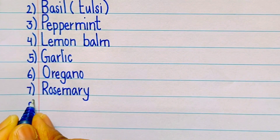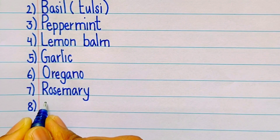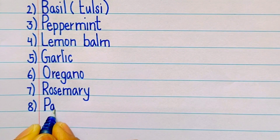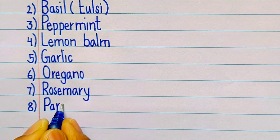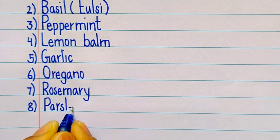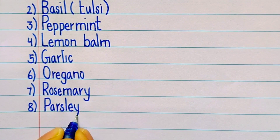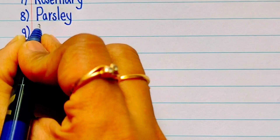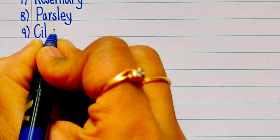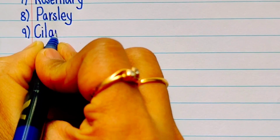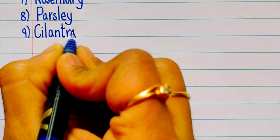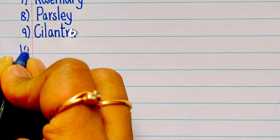Eighth one is parsley, P-A-R-S-L-E-Y, parsley. Ninth one is cilantro, C-I-L-A-N-T-R-O.